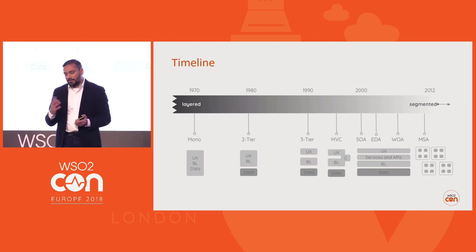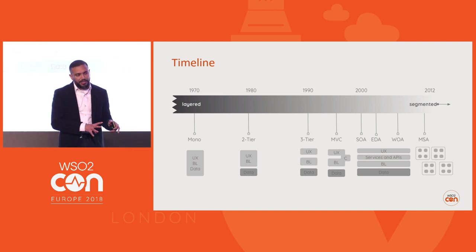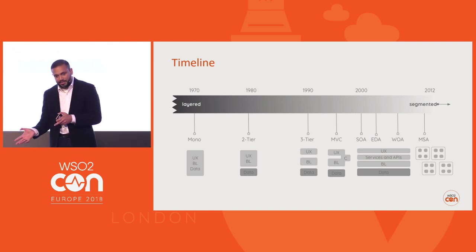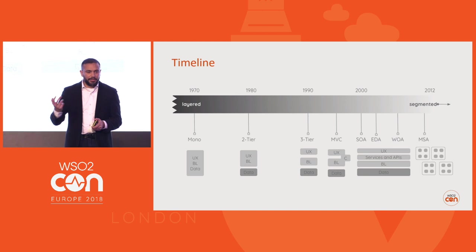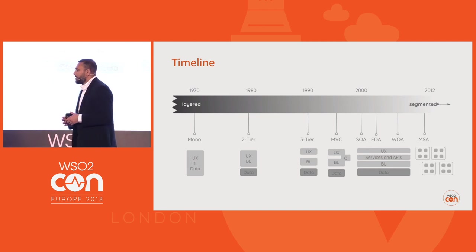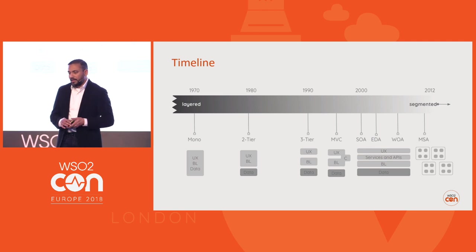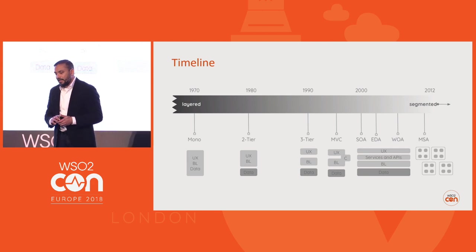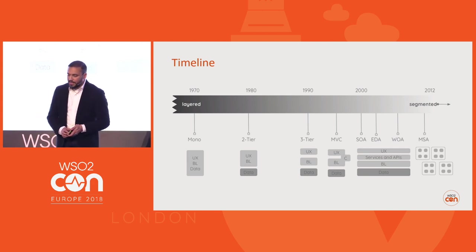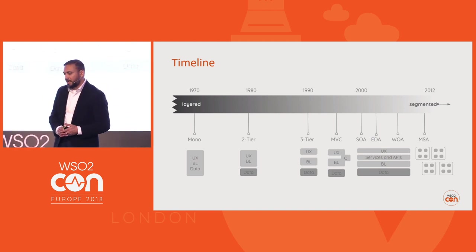Then, with the dot-com boom, a lot of development moved into web development. With that, a sub-architecture pattern called Model-View-Controller was introduced. It separated the communication between these three layers into a separate controller layer. Then service-oriented architecture came into the picture, introducing a new service layer with services and APIs, as well as sub-patterns like event-driven architecture and web-oriented architecture.